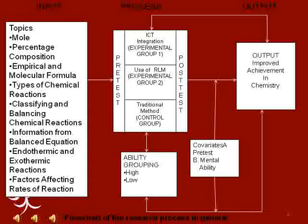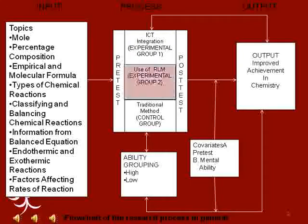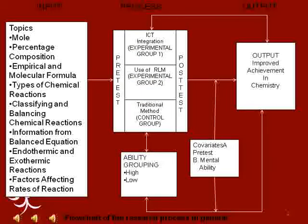The traditional method makes use of the chalk and board as instructional aids. Three intact classes in chemistry were grouped into three. Group one was subjected to the ICT integration in teaching chemistry. Group two was exposed to the RLM, and group three underwent the traditional method. Groups one and two were the experimental groups, while group three was the control group.